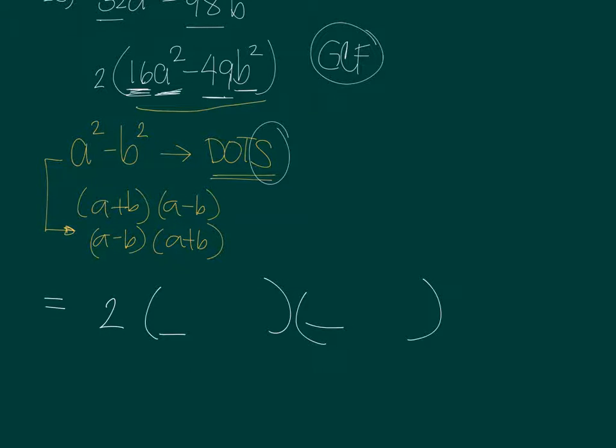The first being the square root of 16A squared, which is 4A, and the second to be the square root of 49B squared, which is 7B. And then the second factor will have those same expressions, and then the first is a plus, and the second is a minus, or the other way around.